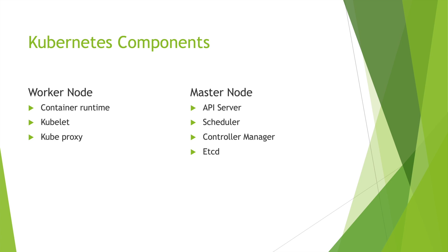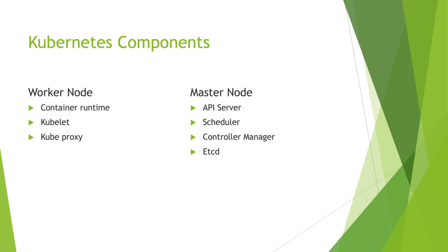Kubelet is the Kubernetes process that interacts with both the container and the node itself. It starts the pod, inside of which we have the container. Kube-proxy is another node process that performs intelligent forwarding of requests between pods. Master node components basically handle management tasks and are also known as the control plane.